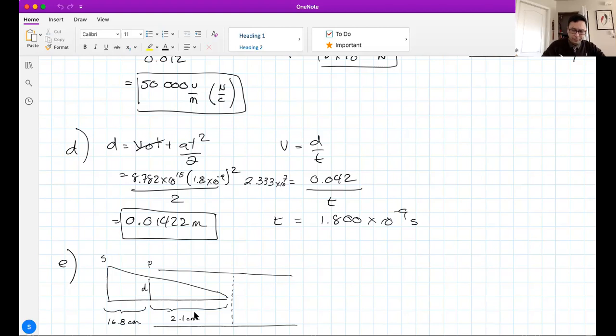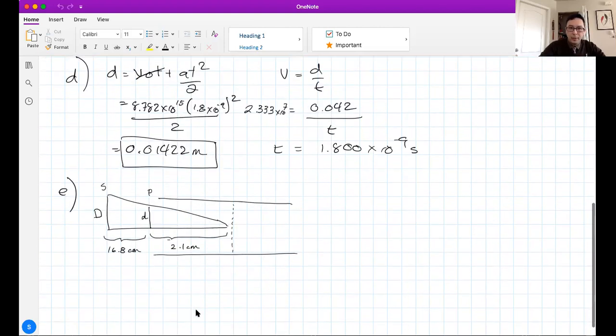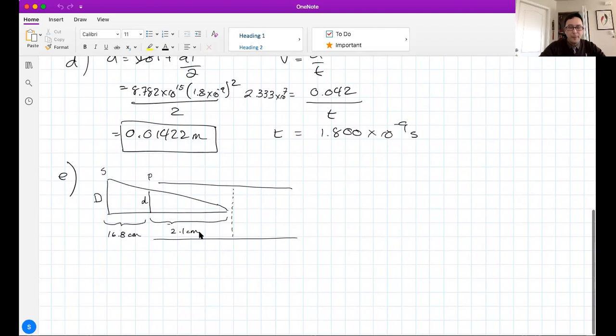From the end of the plates to the screen is an additional 16.8 centimeters. This is the deflection on the screen. We have this special triangle relationship. Here's the relation: little d over little l equals big D over big L.